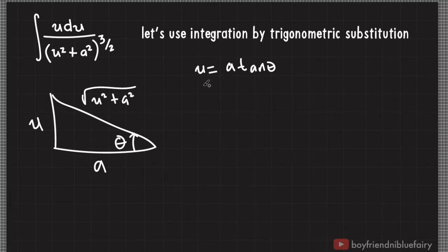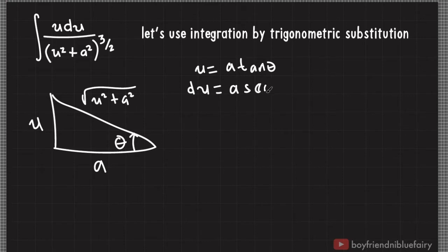then u is equal to a tangent theta, because tan theta is equal to u divided by a. And the integral of u, which is du, is equal to a times the derivative of tangent theta, which is secant squared theta, times the derivative of theta, which is d theta.